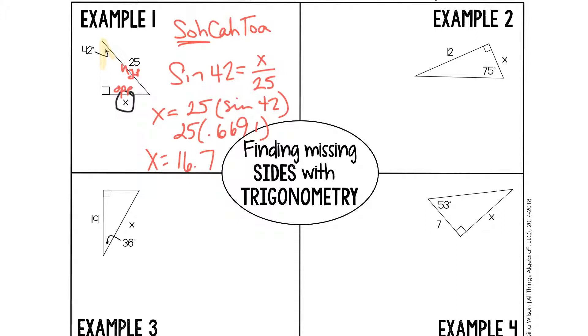So with example one worked, you can now work numbers two, three, and four, solving the missing side measures with trig.